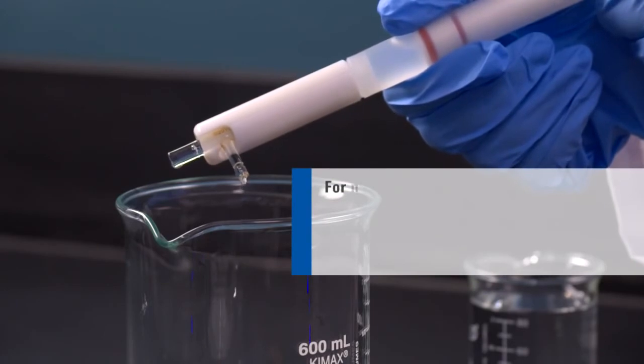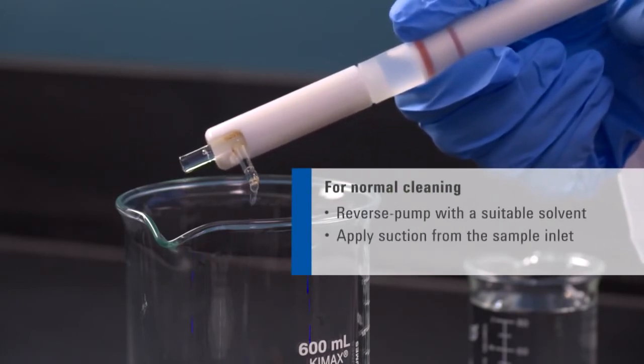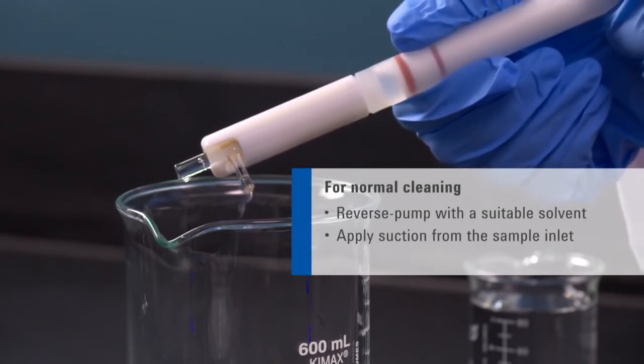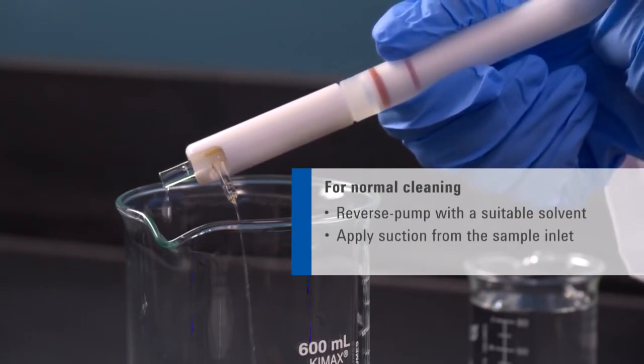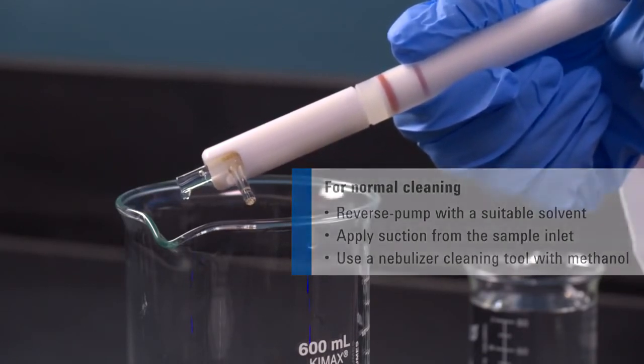For normal cleaning, reverse pump the nebulizer with the tip and a suitable solvent or apply suction from the sample inlet using a vacuum aspirator. The easiest way to clean a glass concentric nebulizer is to use a dedicated nebulizer cleaning tool to force methanol solution through the tip.